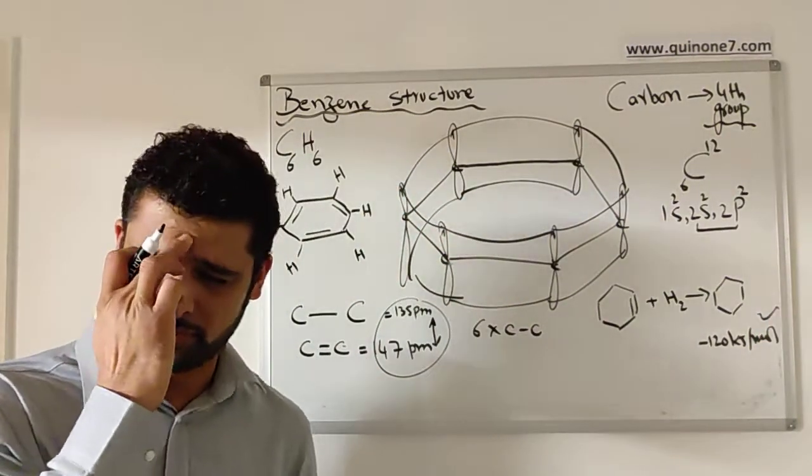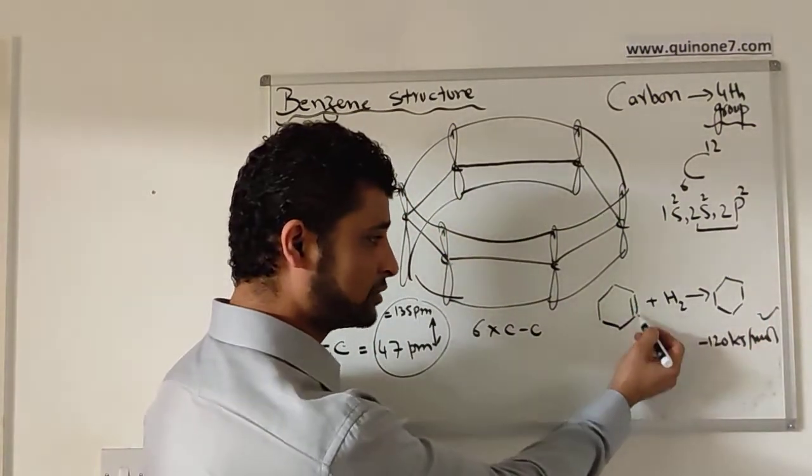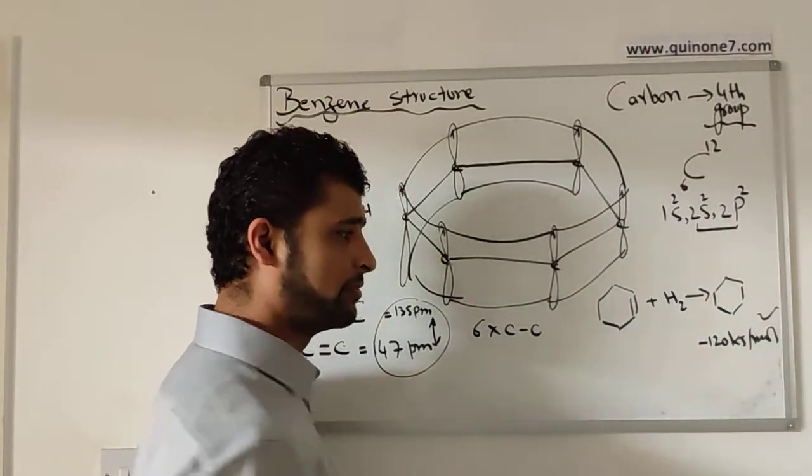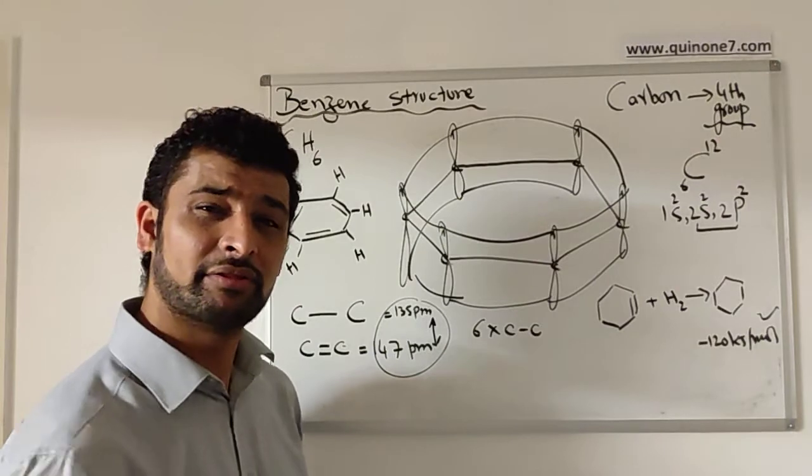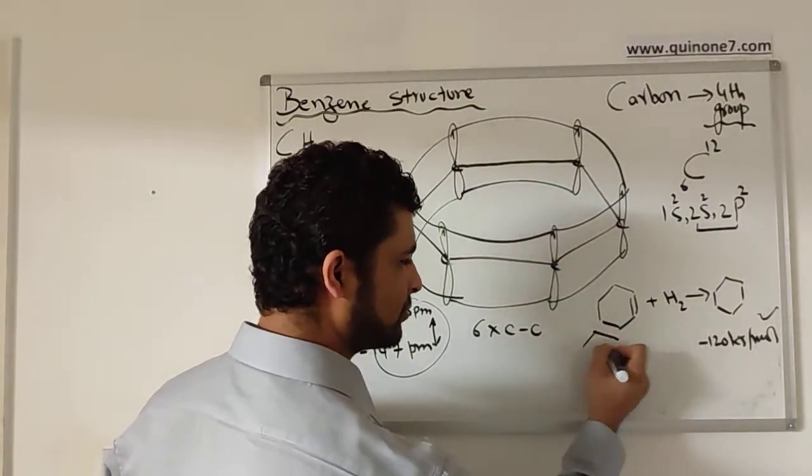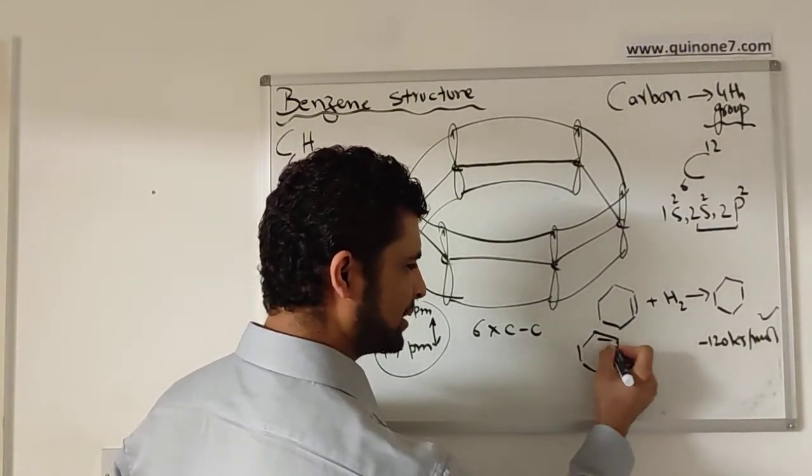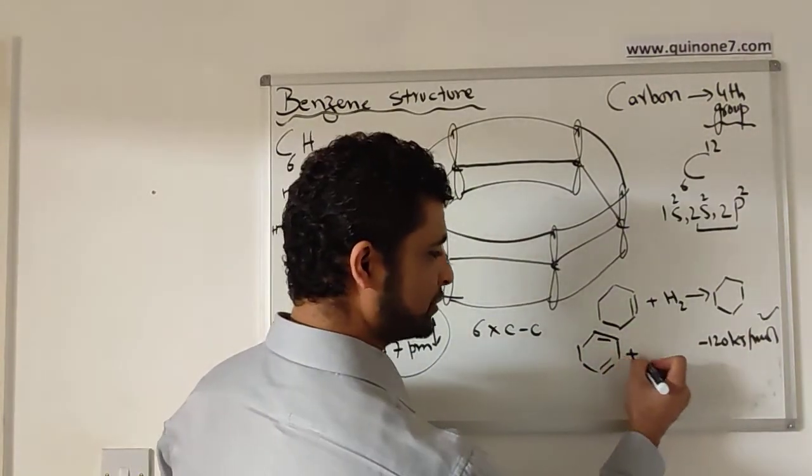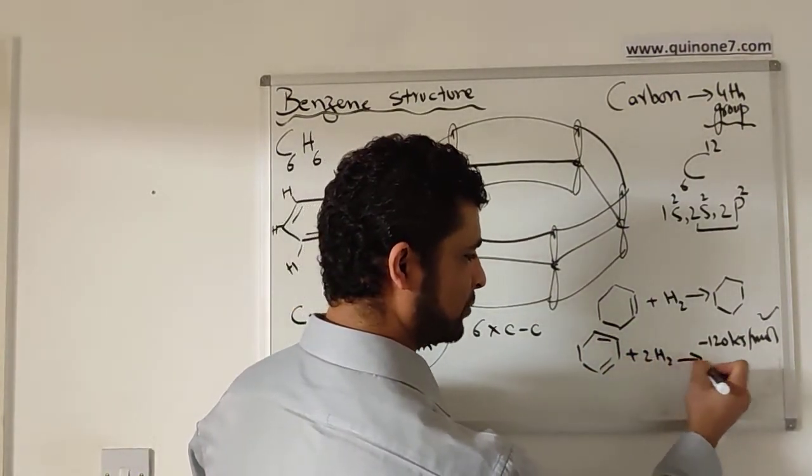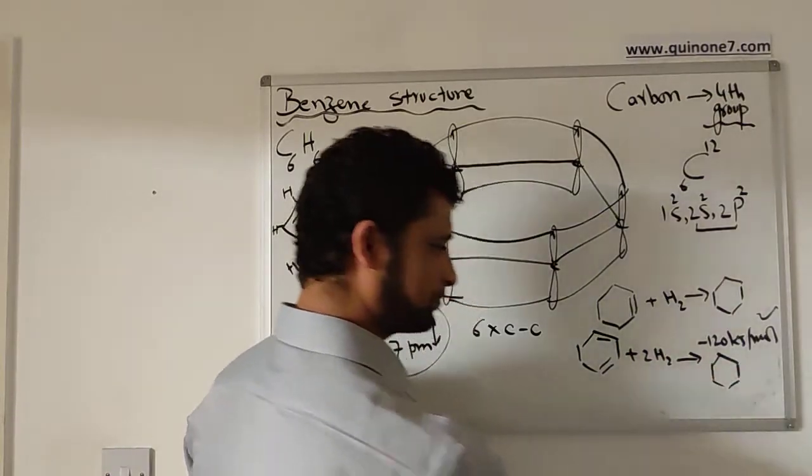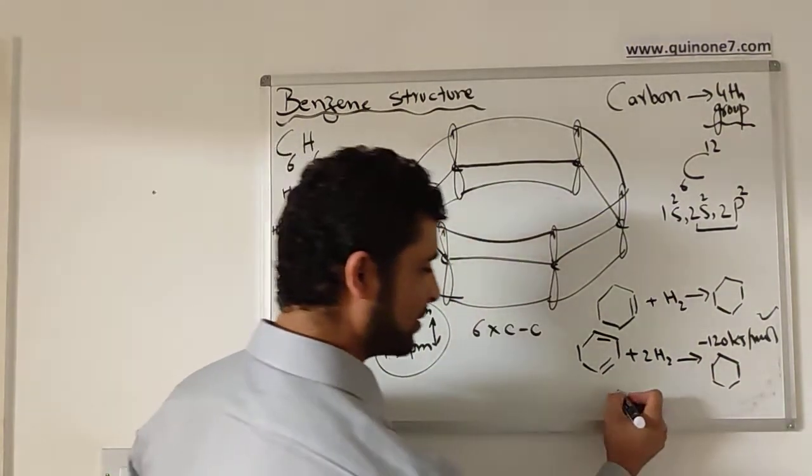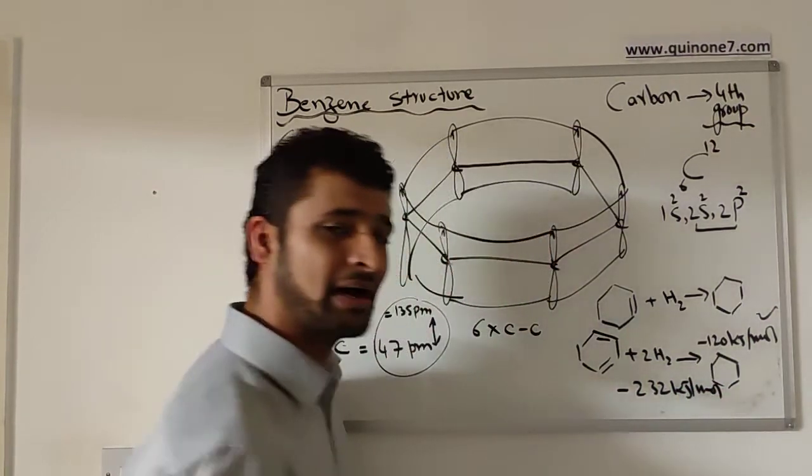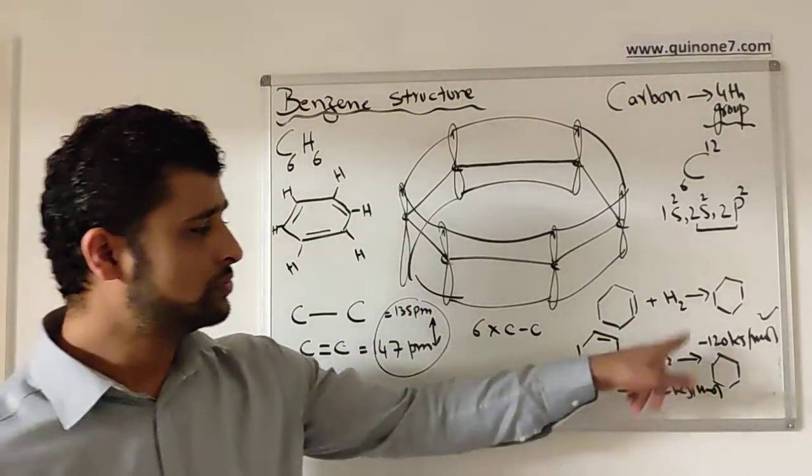When they did that, it came out at -120 kJ/mol. There's one thing which is missing that hasn't been taught in the specs, but there is actually dicyclohexene. They did the hydrogenation of that molecule making cyclohexane, and that suggested it is -232 kilojoules per mole of energy.